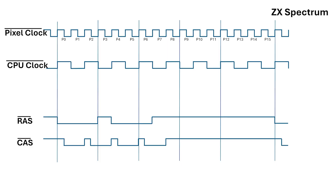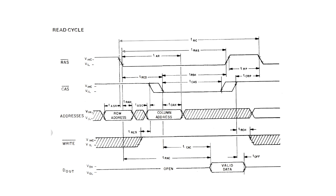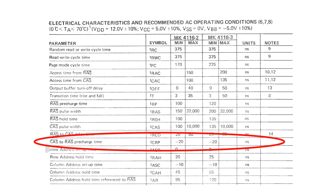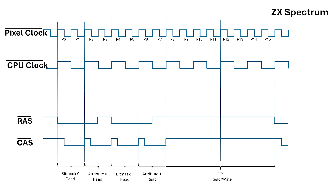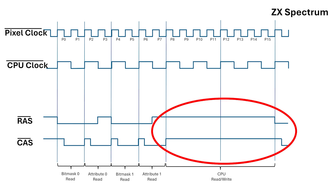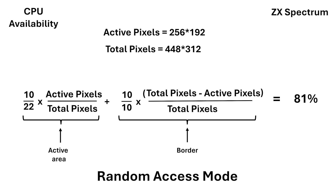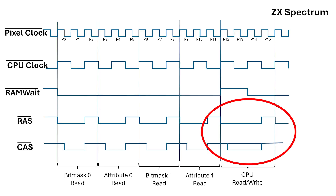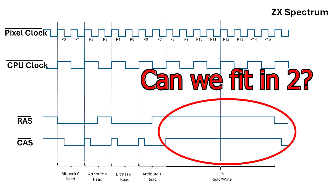So with this new timing diagram derived from reading the actual signals, this potentially gives us 8 pixel clocks — or 4 CPU T-cycles — for the Z80 to have access to the memory. Does that change our calculation for CPU efficiency while using DRAM during active video? I previously computed a value of 81% in the video comparing the 16K ZX81 with the 16K ZX Spectrum, based on the assumption of one CPU memory access per 16-pixel cycle — but maybe we could fit in two. Let's have a look.